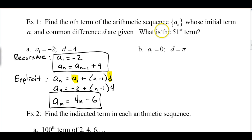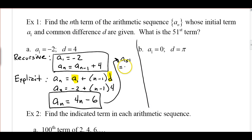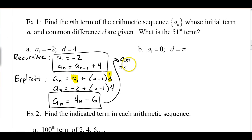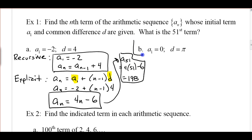Now let's find the 51st term — a sub 51. So a sub 51 is going to be 4 times 51 minus 6, which gives us 198. That's the 51st term. Go ahead and pause the video and try part B. We'll talk about that in class — make sure you got the right answers for the recursive formula, the explicit formula, and the 51st term.